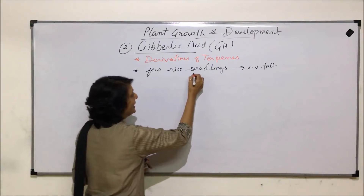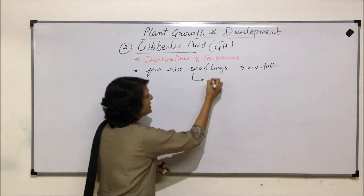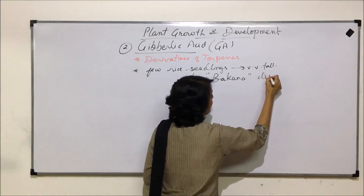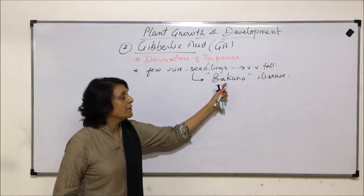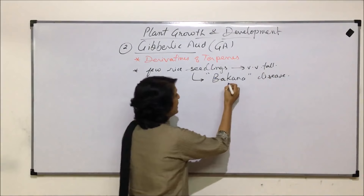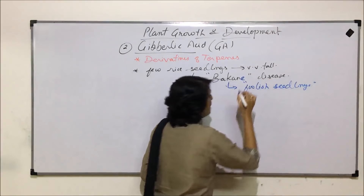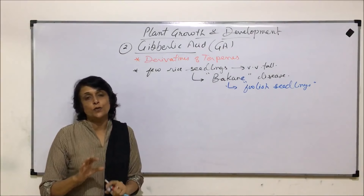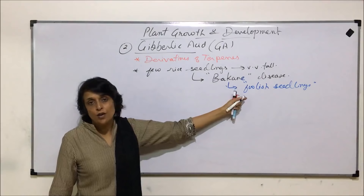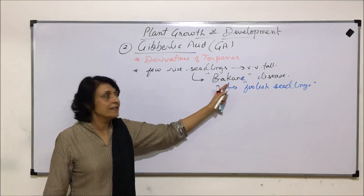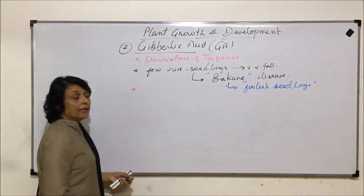These farmers called these seedlings by a term in their language: bakanae disease. If we translate 'bakanae,' it means 'foolish seedlings.' So they meant that these seedlings, which normally should have attained a height of 3 to 4 feet, grew exceptionally tall — foolish behavior. And so they called it bakanae disease, which actually means foolish seedling disease.